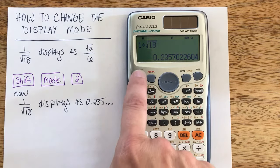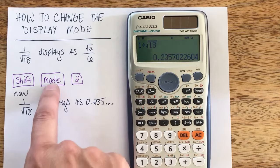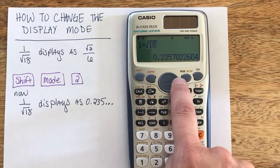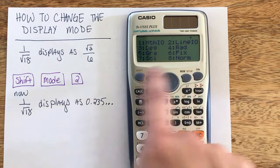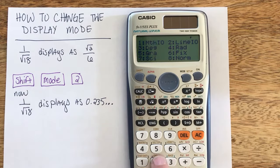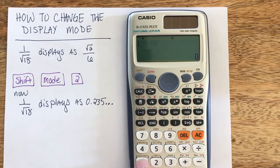So first hit the shift button, which is in the top left corner, then you're going to hit the mode, which is right after the replay, and it actually says mode and setup. From here I'm going to choose option 2, and now my calculator is ready to go.